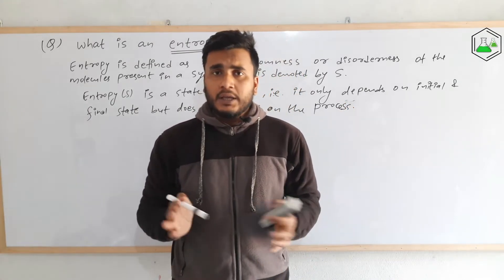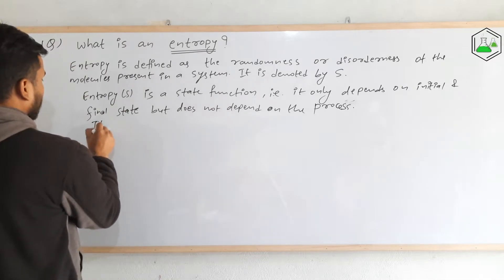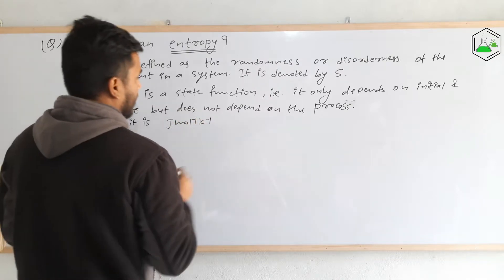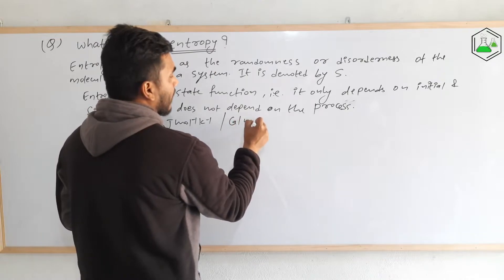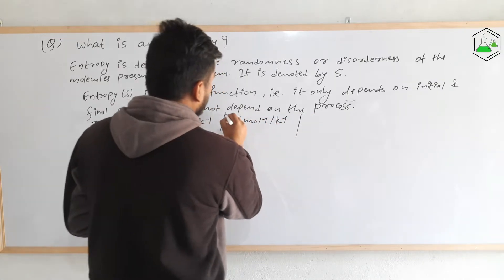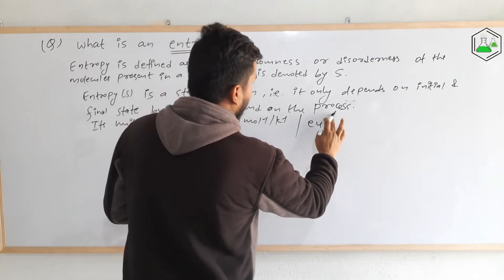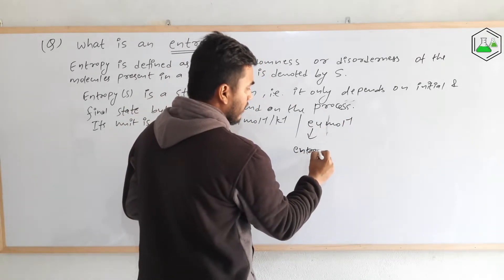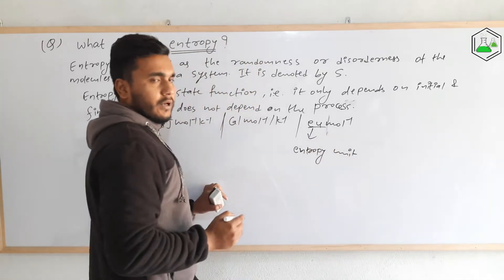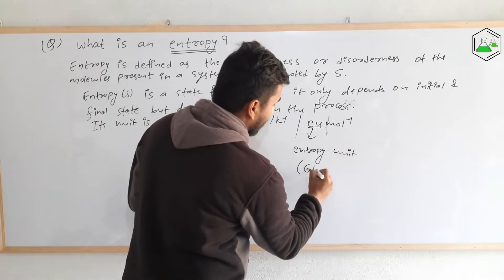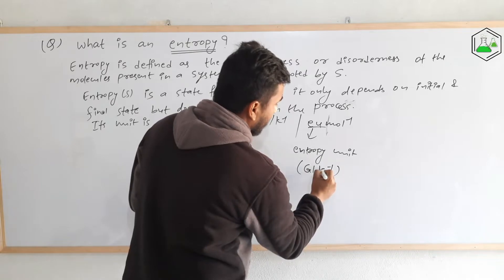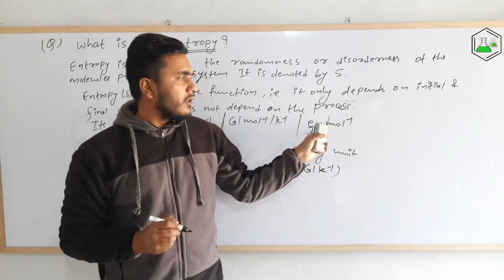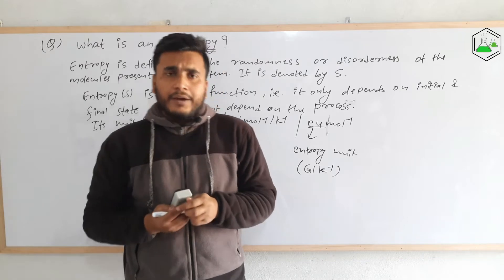This is what entropy actually is. Its unit is Joule per mole per Kelvin, or calorie per mole per Kelvin. It is sometimes written as EU per mole as well, where EU means entropy unit. EU means entropy unit and it simply means calorie per Kelvin. So the unit of entropy can simply be EU per mole as well.